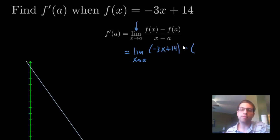Same with f(a), so you have minus, and then f(a), which is -3a + 14, all over your x - a.